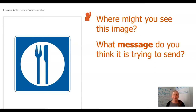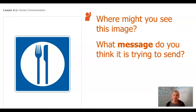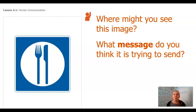Where might you see this one though? This is the one I think — hmm — I wonder how many of you have seen this sign. What message do you think it's trying to send? If you've never seen it, what do you know about it already? There's a fork, there's a knife. I'm pretty sure it's trying to tell me that this is a place where I could eat, or you could eat, or your whole group could eat — a place where we could go and find food. We know that just based on a fork and a knife.